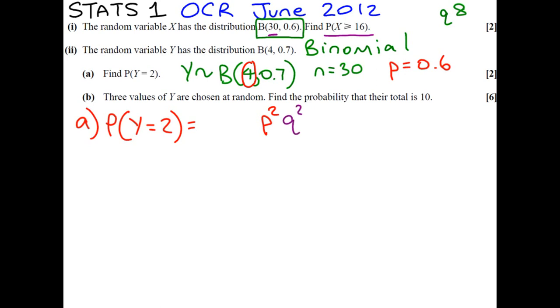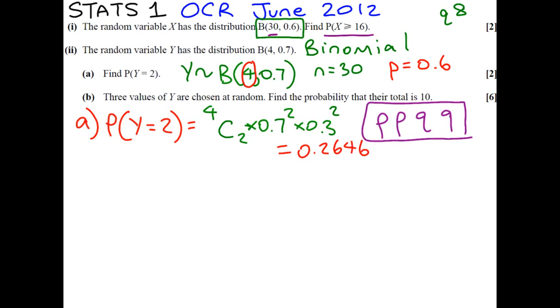Now we need to think about the different ways we could do this. We've got P, P, Q, Q. We need to think how many different ways that can be ordered. The way you can do that is by doing 4 choose 2. So 4C2 times by P squared. And P is 0.7, so it's going to be 0.7 squared, times by Q squared. And Q is going to be 0.3. And you've put that into your calculator to get the final answer of 0.2646.